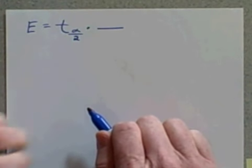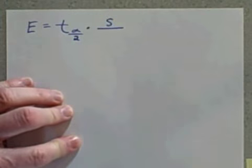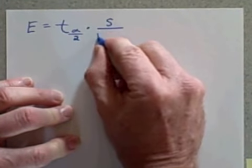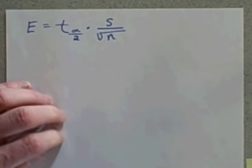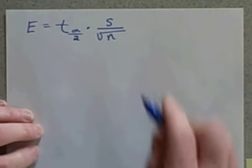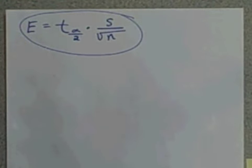And we're going to multiply times a fraction, but the numerator is not going to be the population standard deviation—it's going to be some standard deviation that we know. And what do we know? We're going to know the sample's standard deviation, so we'll put S there. And we're still going to divide it by the square root of the sample size. Okay, so this is the formula we're going to be using now, slightly different than what I wrote earlier and crossed out.